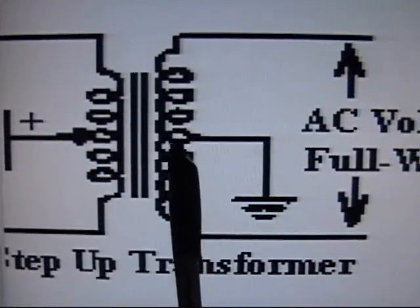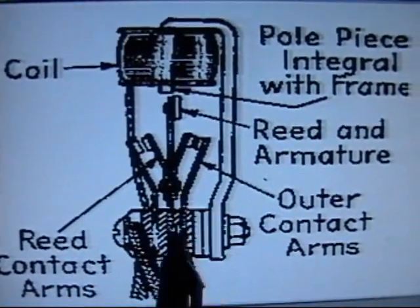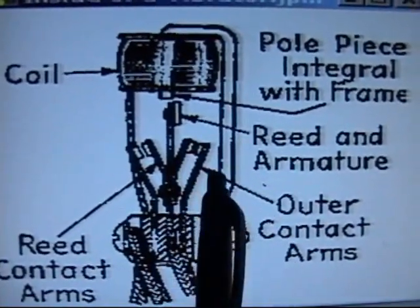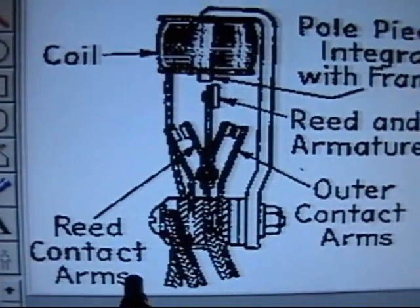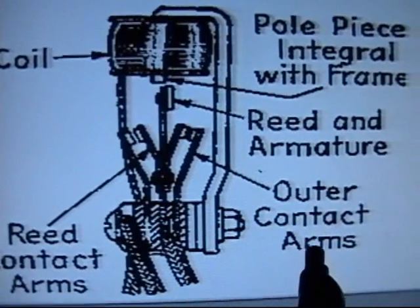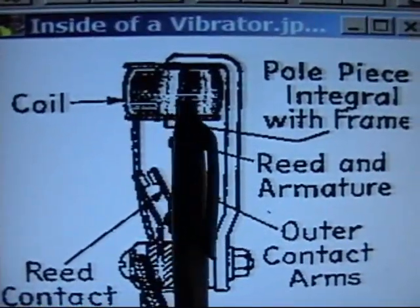This is what the inside of a vibrator looks like. It has the contacts, the reed contact arms, the outer contacts, the reed itself, and of course the coil up here.